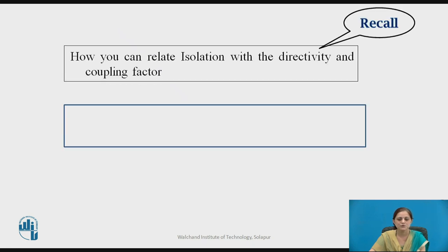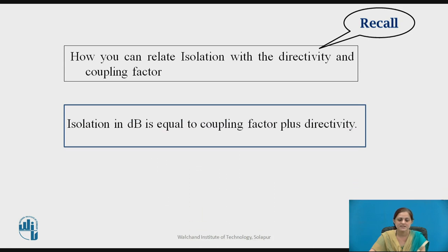Before proceeding to the scattering matrix calculation, you can pause the video here and relate isolation with directivity and the coupling factor — how can these parameters be related to each other? From the above definitions and mathematical equations, you can write: Isolation (dB) = Coupling Factor + Directivity.